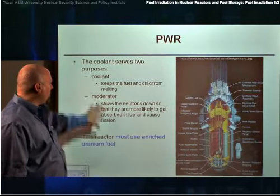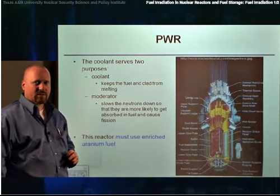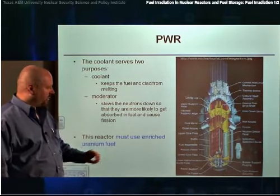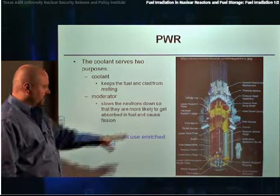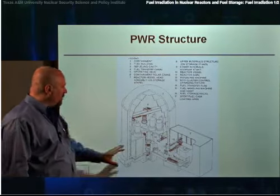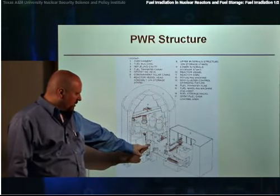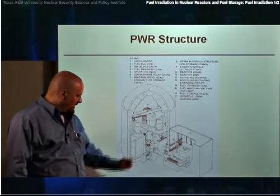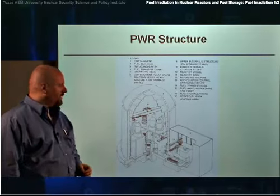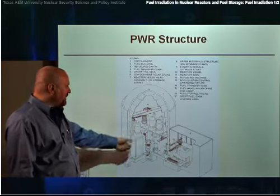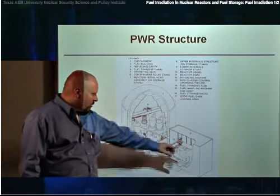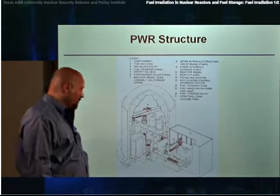The PWR reactor also uses a coolant that serves as the moderator, but that same coolant does not serve as the working fluid. Since it uses a light water reactor, it also has to use an enriched uranium fuel. That picture shows the typical Westinghouse-style PWR reactor. This is the containment structure — the reactor is the small thing right there in the center. The large structures are actually the steam generators, and then containment around the outside provides safety, so that if anything bad happened inside the reactor, it would all be contained inside this large concrete and steel structure. Also shown here is the spent fuel pool, where spent fuel from the reactor is stored in a separate building outside of containment.